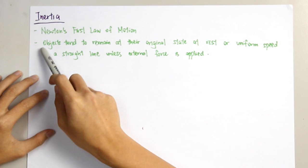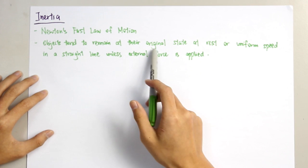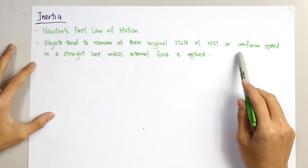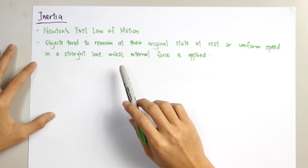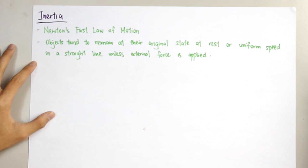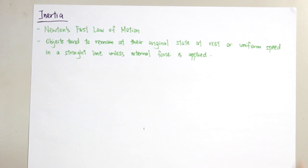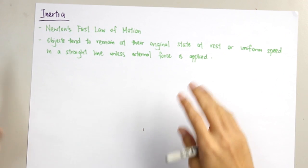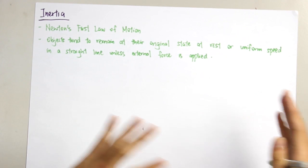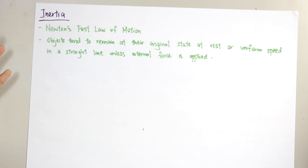Your body, which is the object, tends to remain at its original state when the car is moving, so you have uniform speed. And when the brake is applied in a straight line, your body tends to continue its motion of uniform speed. But the car already stopped. This is why the inertia happens here, and here are some other examples of inertia.